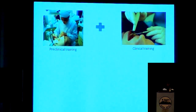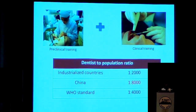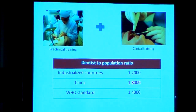Can we produce more dentists with less time and money? The answer to this question is very particularly important in China because we have a great shortage of dentists. In most industrialized countries, the dentist-to-population ratio is about 1 to 2,000, while in China this ratio is approximately 1 to 8,000. The World Health Organization standard suggests a ratio of 1 to 4,000, meaning the current shortage of dentists in China is more than 100,000.